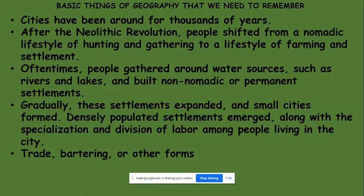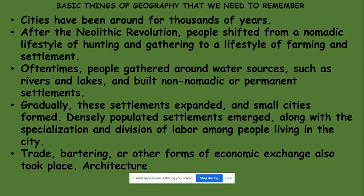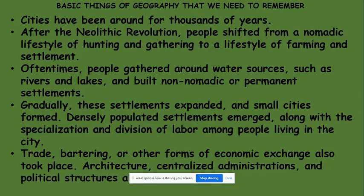Trade, bartering, and other forms of economic exchange also took place. Architecture, centralized administration, and political structures all formed around a city. Barter system is the system of exchanging things — for example, I give you some rice and you give me some vegetables. Bartering and trade were different forms of economic exchange during nomadic times. Later, as people evolved, architecture, centralized administration, and political structures started growing. These are different geographical things to always keep in mind.